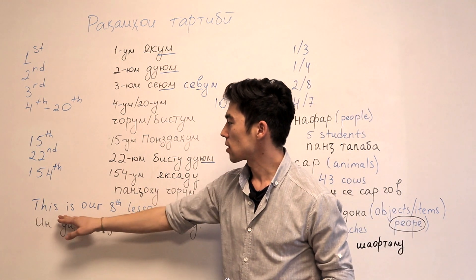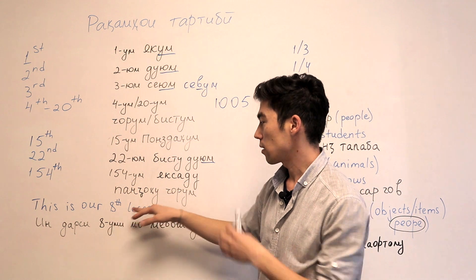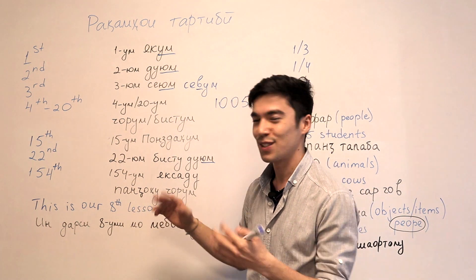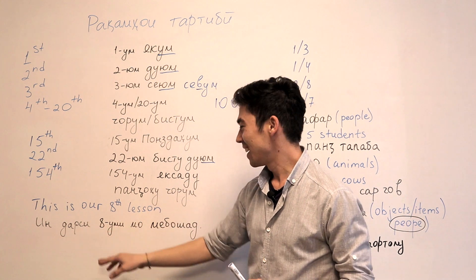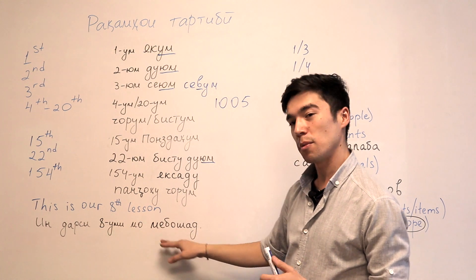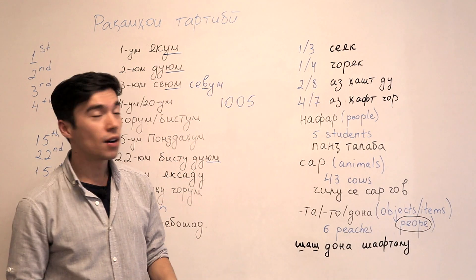There is an example. The sentence. This is our eighth lesson. IN DARSI... DARSI... Sorry. DARSI means lesson. IN DARSI HASHTUMIMO ME BOSHAT. IN DARSI HASHTUMIMO ME BOSHAT. Alright.